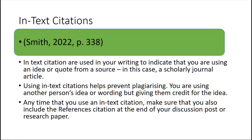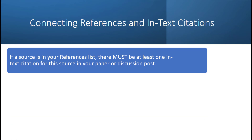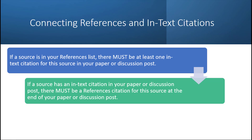Anytime that you use an in-text citation, make sure that you also include the references citation at the end of your discussion post or research paper. Connecting reference and in-text citations is important. Remember: if a source is in your reference list, there must be at least one in-text citation for this source in your paper or discussion post. If a source has an in-text citation in your paper or discussion post, then there must be a references citation for this source at the end of your paper or discussion post.